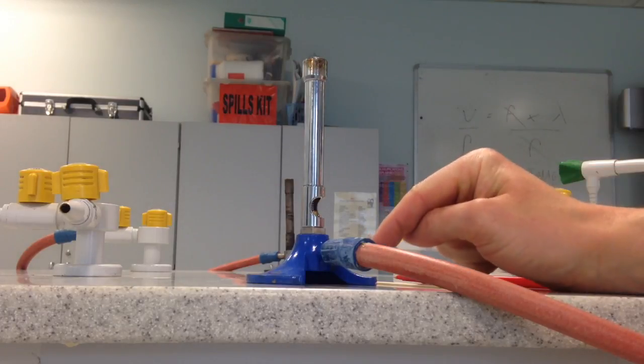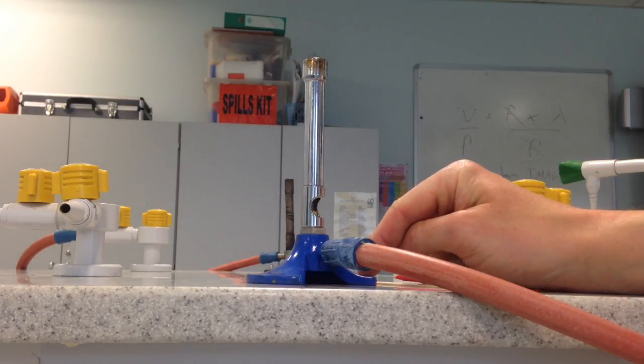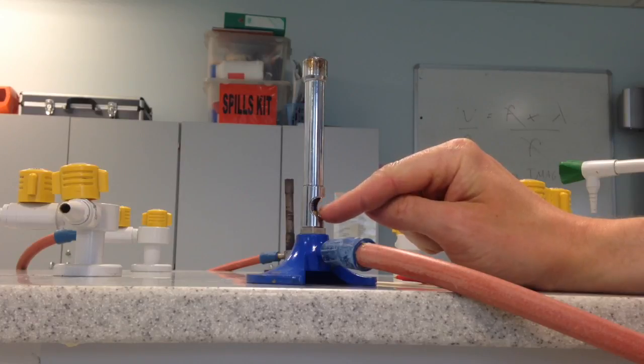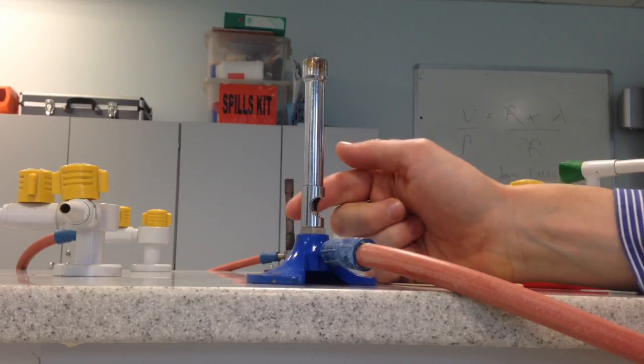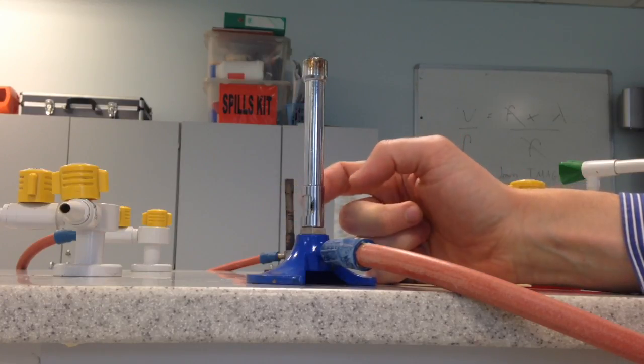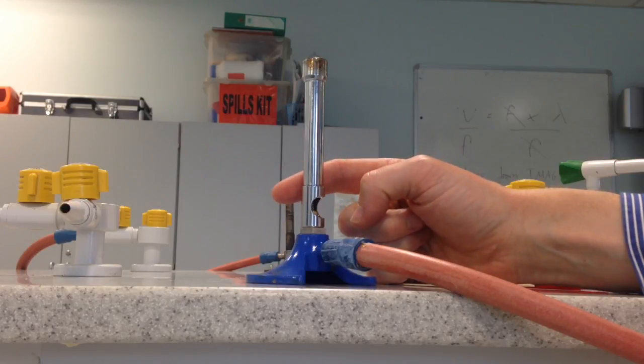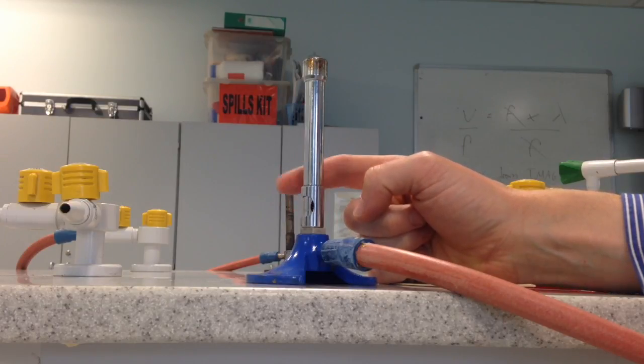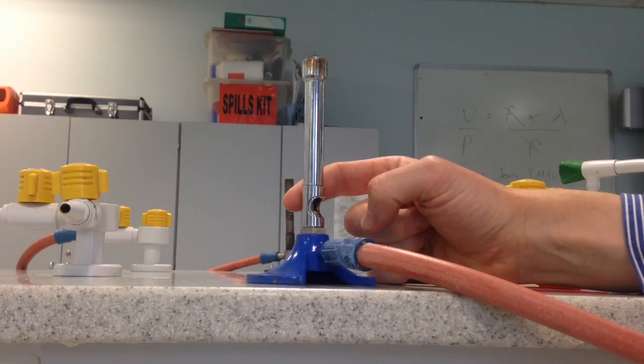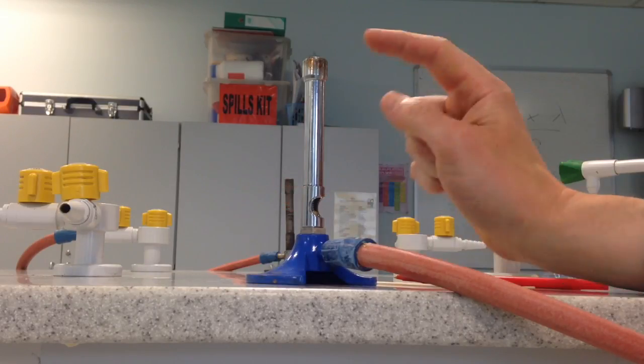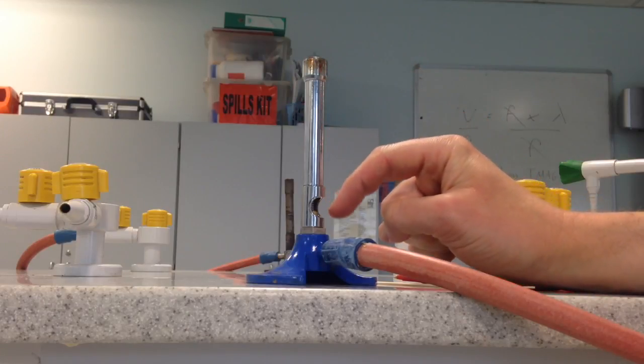So at the bottom we have the base, we have a hole here that is called the air hole, around the air hole we've got a spinny thing which is called the collar and the collar either closes the air hole or opens it, or if you're really good with Bunsen burners you can maybe have it half open, and then this top part here is called the barrel.